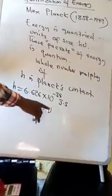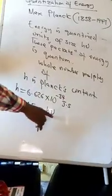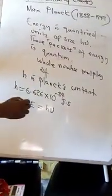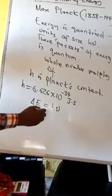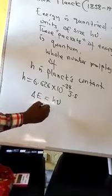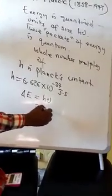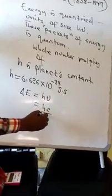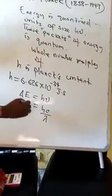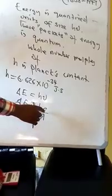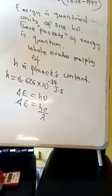N constant in joule second and nu is frequency, so this equation can also be written as H is equal to C over lambda, where C over lambda is equal to frequency.